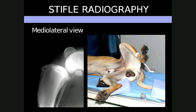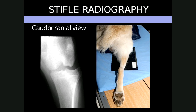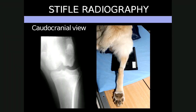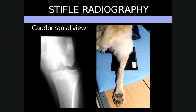For the craniocaudal view, the patient is placed in sternal recumbency and the affected limb is extended caudally alongside the body and slightly rotated laterally, so that the patella is placed in the middle of the femur. The unaffected limb should be removed out of the way, and the primary beam should be centered on the tibial plateau.